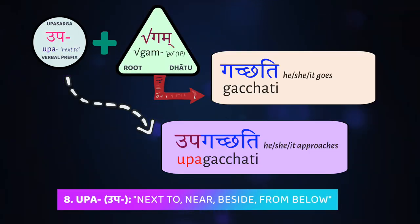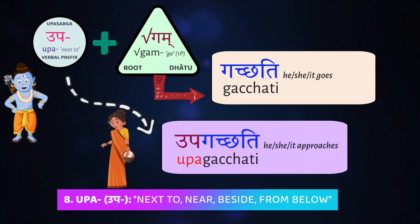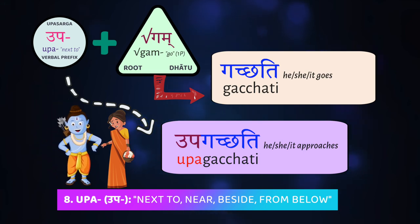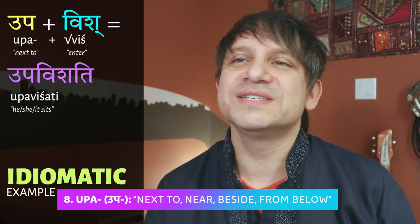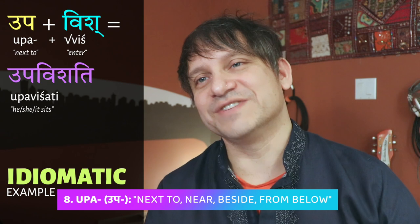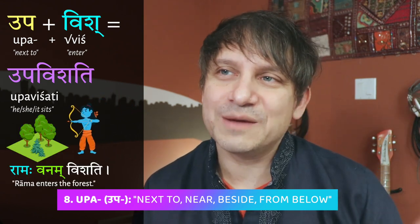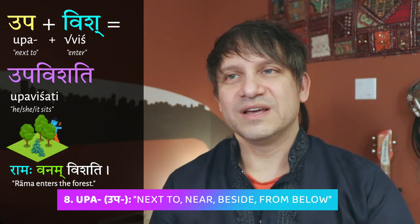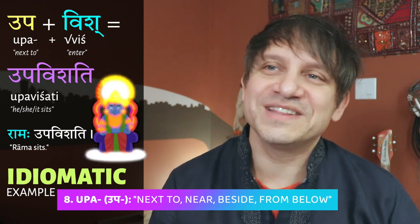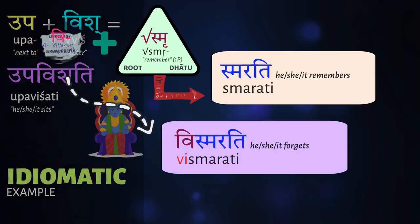A similar prefix is upa, which means 'approaching towards, usually from below, from a subordinate lower position.' Upa plus gam means 'to approach up to someone' — Rāmaḥ Sītām upagacchati, 'Rāma approaches up to Sītā.' Upa has many idiomatic usages. One comes before the root viś, 'to enter' — viśati. Rāmaḥ vanam viśati means 'Rāma enters the forest.' But upa plus viś means 'to sit' — Rāmaḥ upaviśati means 'Rāma is sitting.'